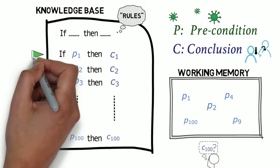Rule 1. To use it you need P1. It's in the working memory. The rule's conclusion C1 gets added. Rule 2. You need P2. It's also known. Conclusion C2 is added.